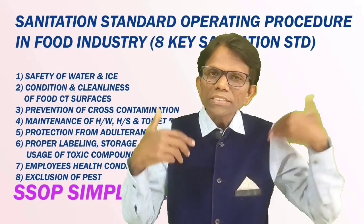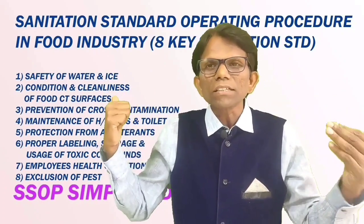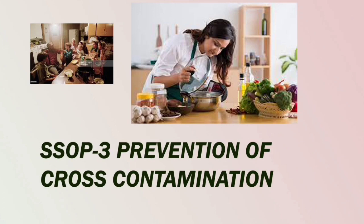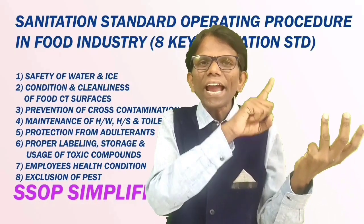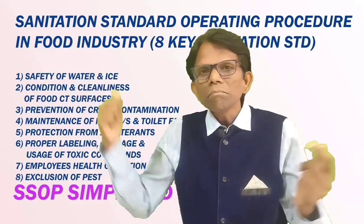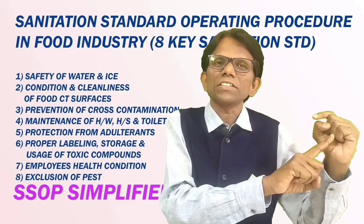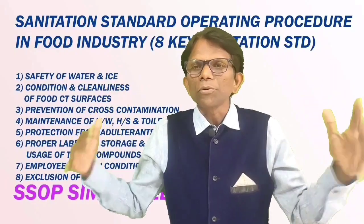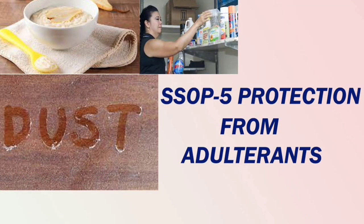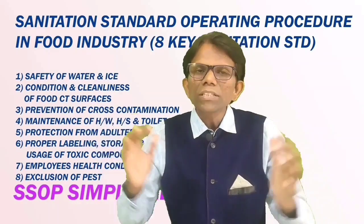The third step is prevention of cross contamination. The mother, while preparing hygienic food for the baby, will never allow anyone to interfere during preparation of the food. Fourth component of SSOP is maintenance of hand washing and hand sanitizing facilities — the mother will wash and sanitize her hands properly before preparing the food. The fifth point is protection from adulterants — the preparation area and environment should be free from windblown dust, which is also a kind of adulteration, so she takes such precautionary measures.